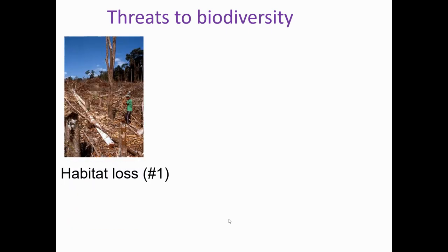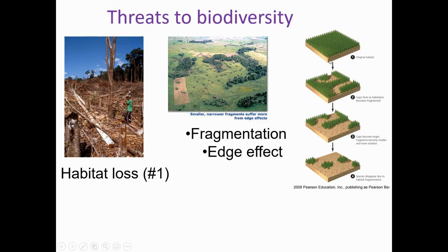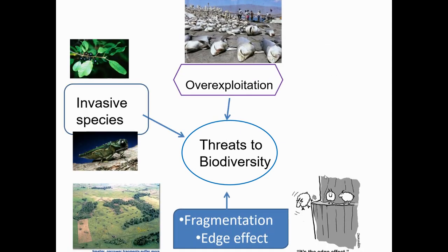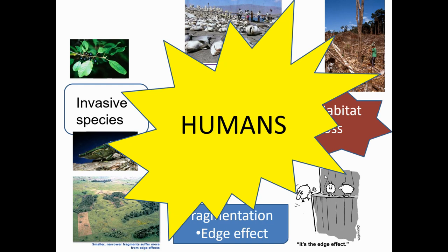A few threats to biodiversity: the number one threat is habitat loss — getting rid of the habitat means animals can't live. Another one is fragmentation and edge effects. Organisms like to live in large areas and be protected by the forest. When you start breaking that up with farmland and roads, animals won't cross over — they get separated, and you end up with these small tracts of land. Then there's overexploitation — hunting things to extinction. What do all these have in common? It's all human-driven. We are interacting with our environment constantly and causing these things to happen, which is not good for the ecosystem.